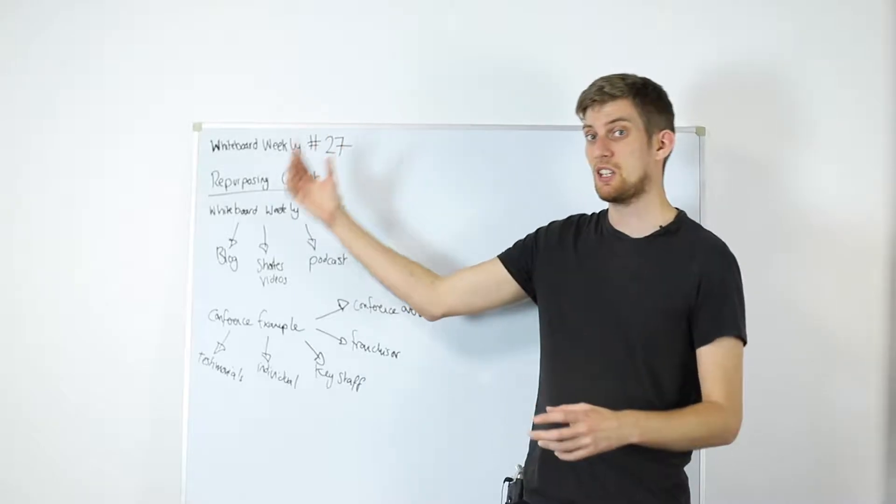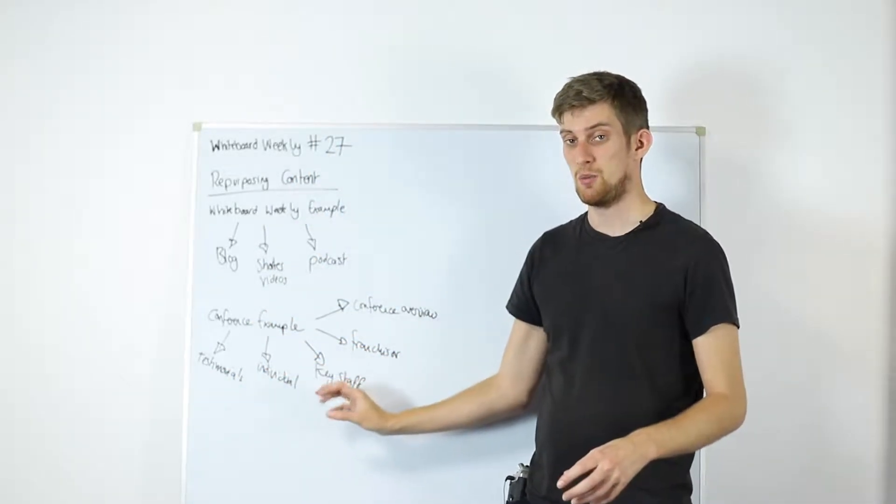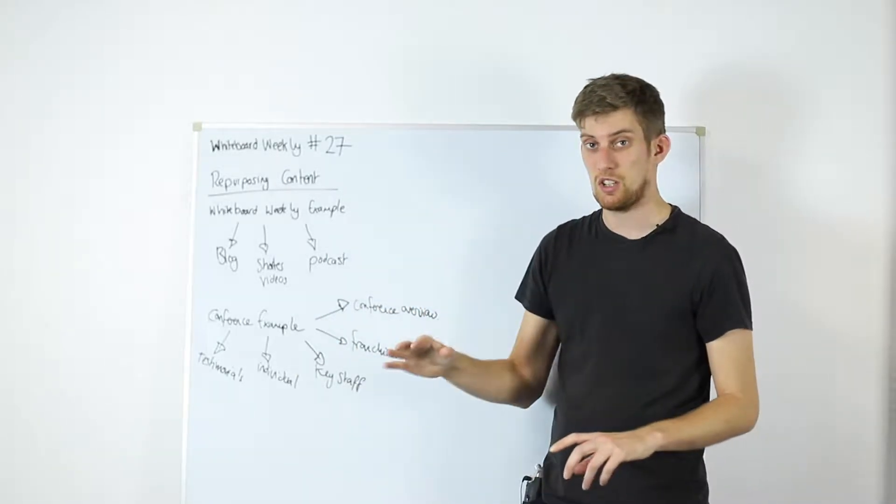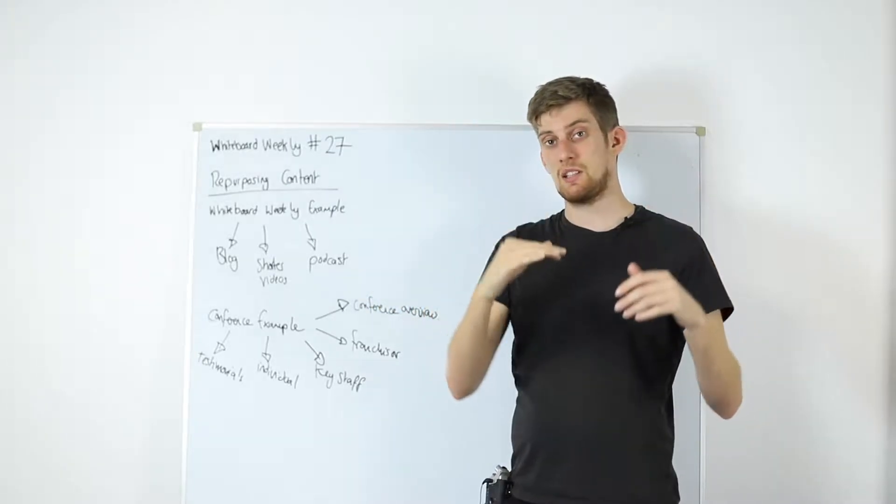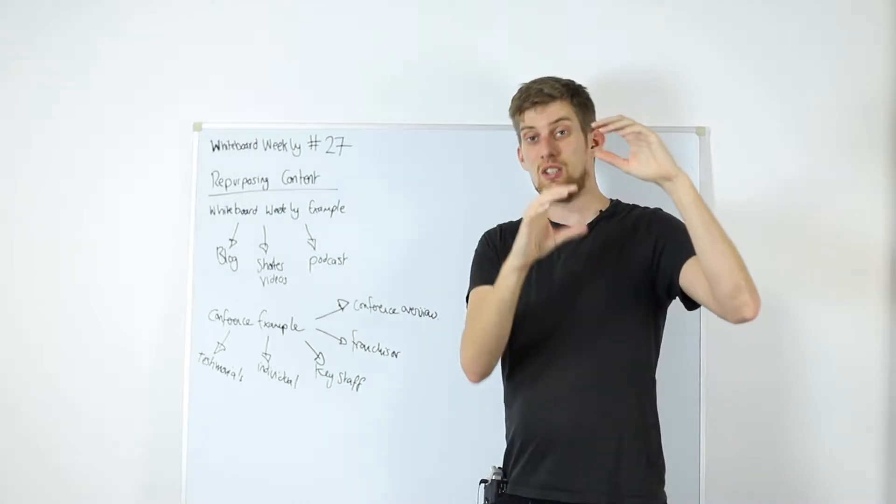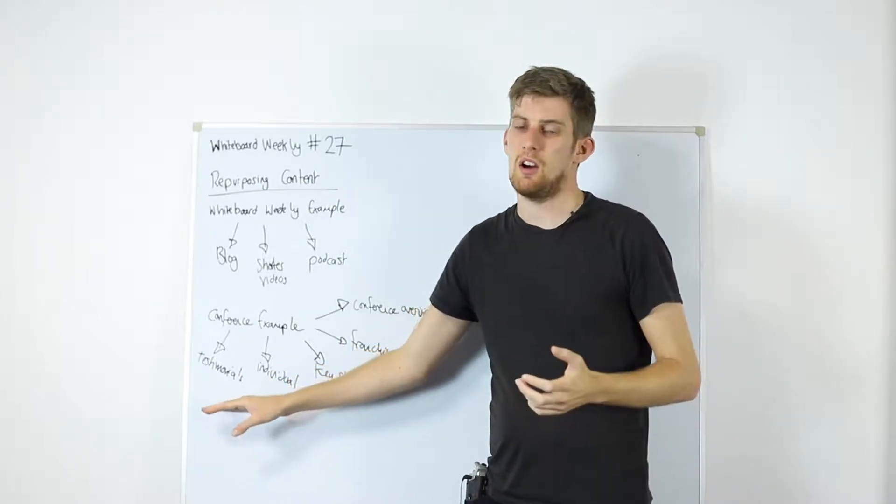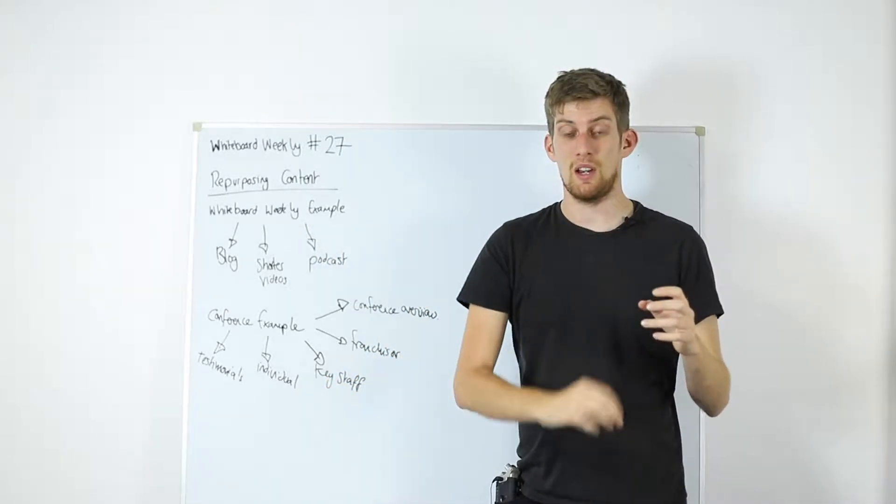So obviously as I said in the last episode of Whiteboard Weekly, you can get loads of franchisee testimonials. You've got all your franchisees in one place, you've got about 10 questions you can ask them. You can use those as one whole video where they answer the 10 questions, or cut those 10 questions into 10 separate videos. So say if you've got 10 franchisees answering 10 questions each, you've got those 10 videos, then you've got 10 other little videos within those videos.